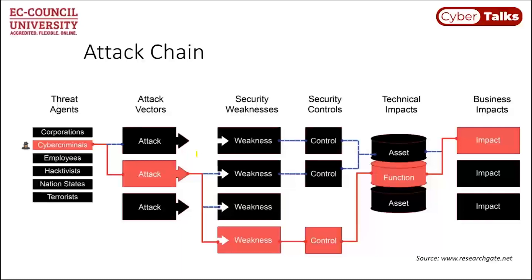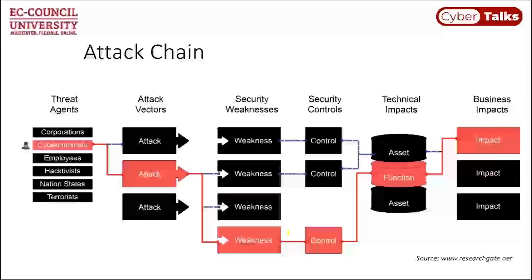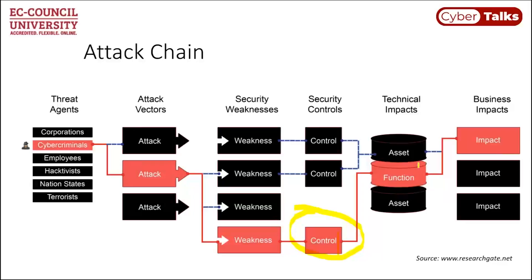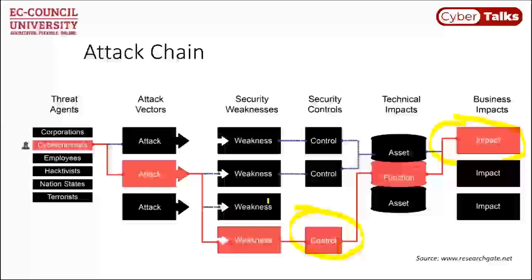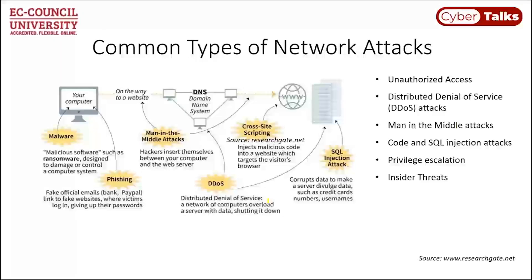Attackers use those attack vectors and identify weaknesses in the security configuration of organizations — missing or misconfigured security controls — and then do exploitation using those tools. They generate a technical impact on assets, functions, or processes in the organization, which in turn generates a business impact. This is the flow scenario of an attack to keep clearly in mind.